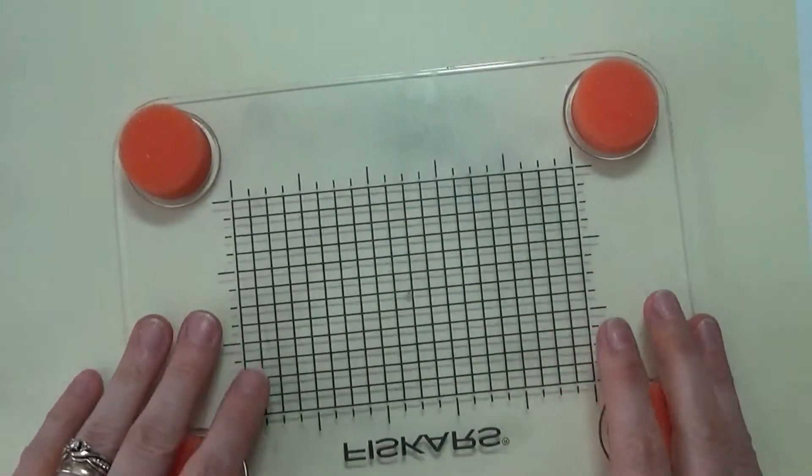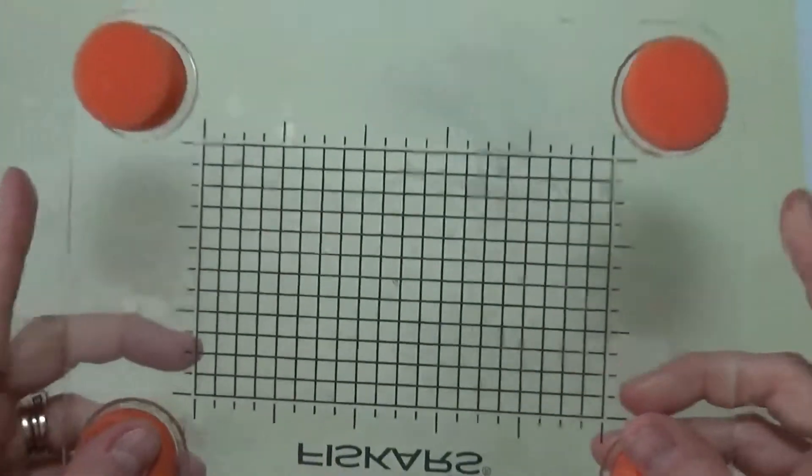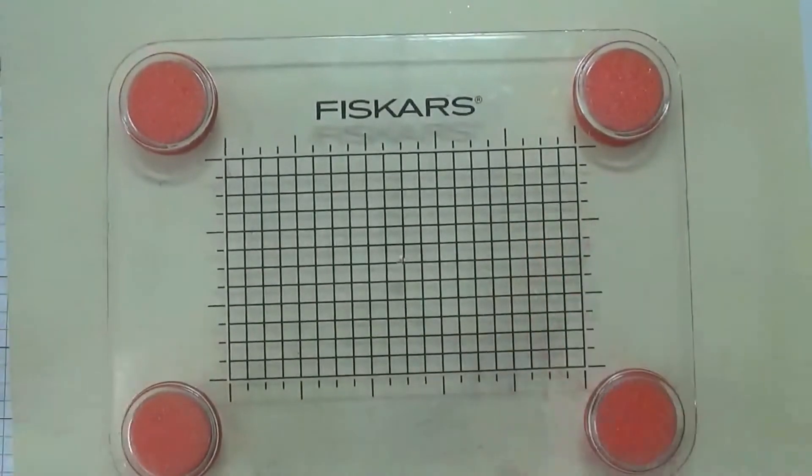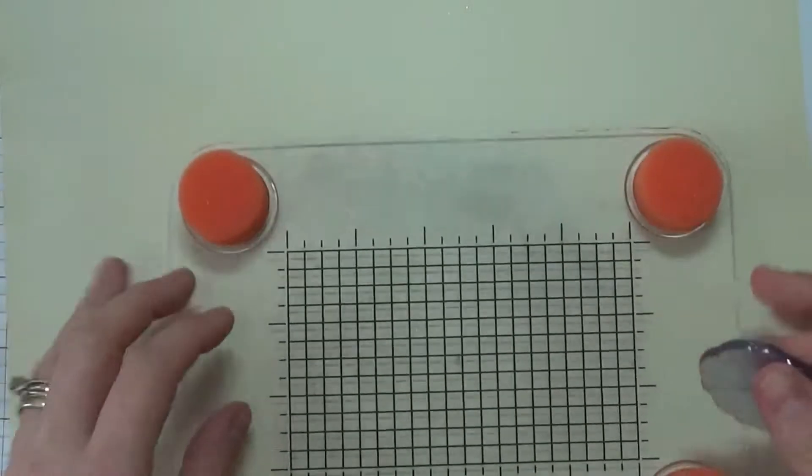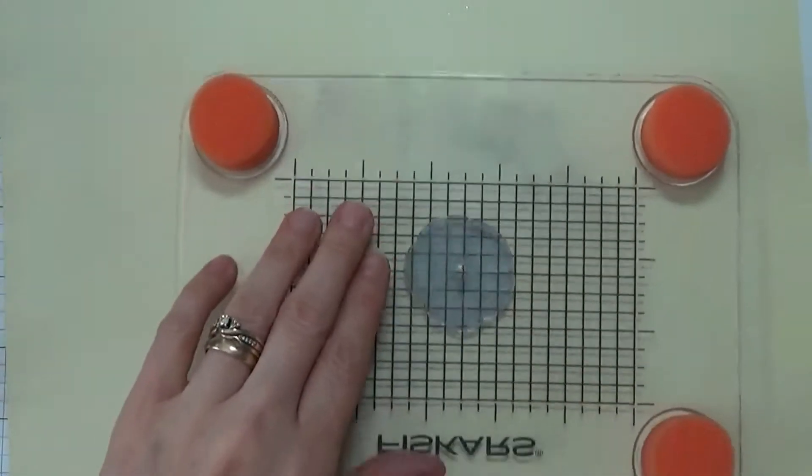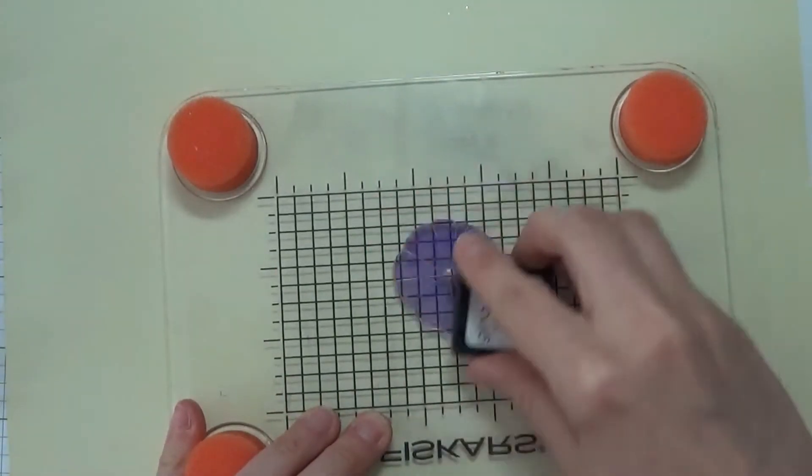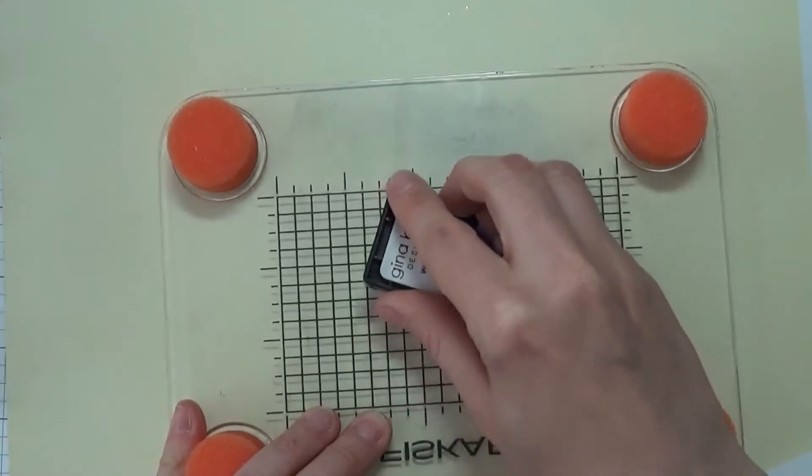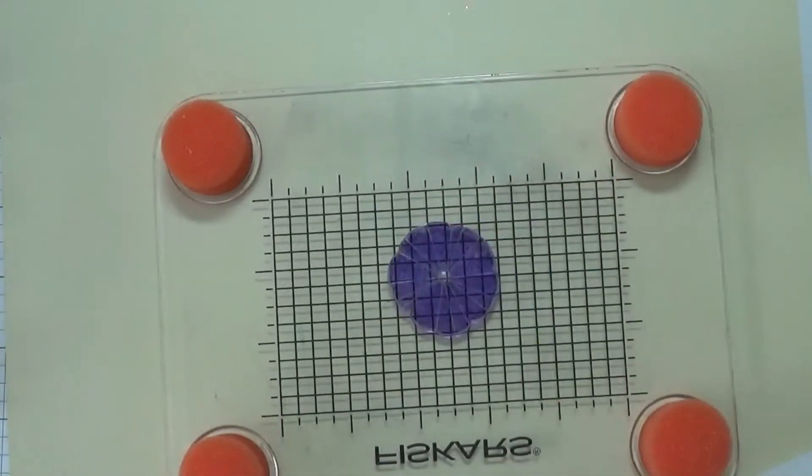And it's got these lines on here as a grid which will help line up your stamp onto this and then you can press it on straight. So just to illustrate how this works, I just put a stamp on to here and we'll just do this flower. I'm just going to ink this up with this new Gina K ink and get that on there nicely.